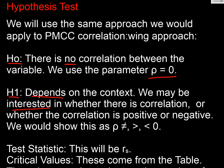So that's our choices. Our test statistic is going to be rs, our correlation coefficient for Spearman, and we can get our critical values from the table like we did for Pearson.